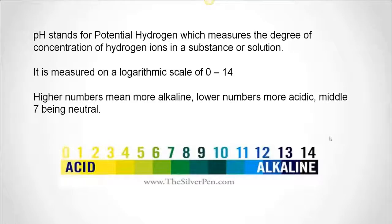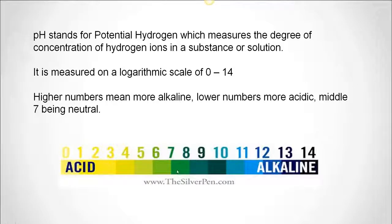pH stands for potential hydrogen, which measures the degree of concentration of hydrogen ions in a substance or solution. It's measured on a logarithmic scale of 0 to 14. Higher numbers mean more alkaline, lower numbers more acidic, and the middle — number 7 — is neutral. Because it's logarithmic, for example, pH 6 is 10 times more acidic than 7, and pH 5 is 100 times more acidic than 7 and 10 times more acidic than 6.